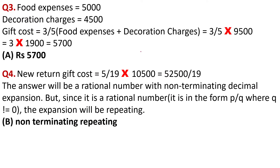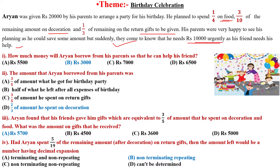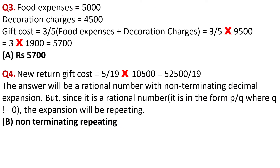It is a very technical question. Question number three: Aryan found that his friends gave him gifts equivalent to 3/5 of the amount he spent on decoration and food. What was the amount of gifts he received? Food expenses: Rs 5,000. Decoration charges: Rs 4,500. Total = Rs 9,500. Gift amount = 3/5 of 9,500 = 1,900 × 3 = Rs 5,700. That option is the correct answer.